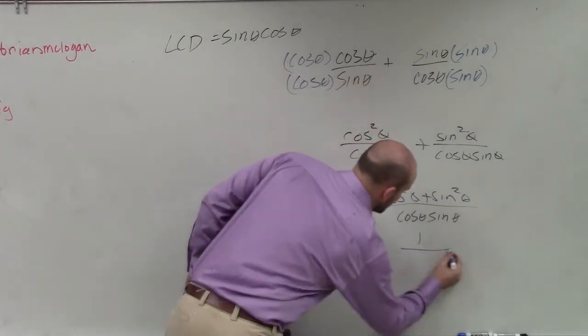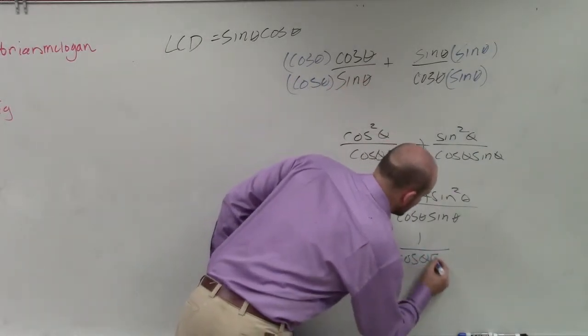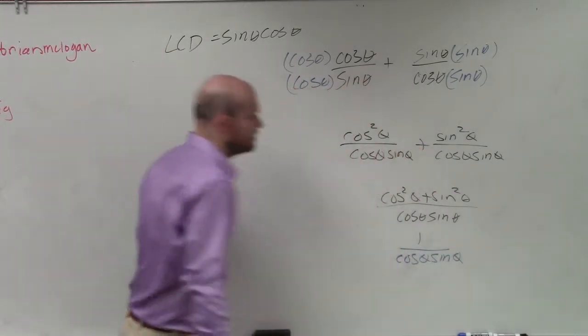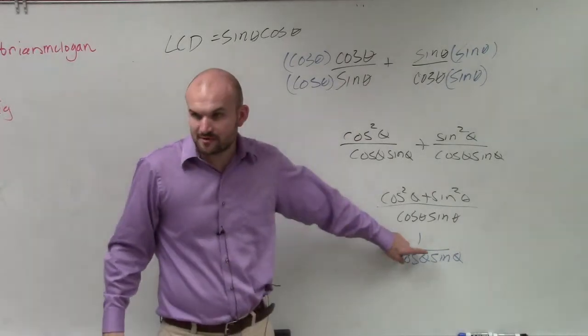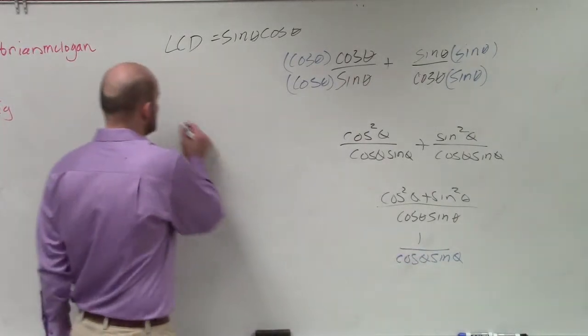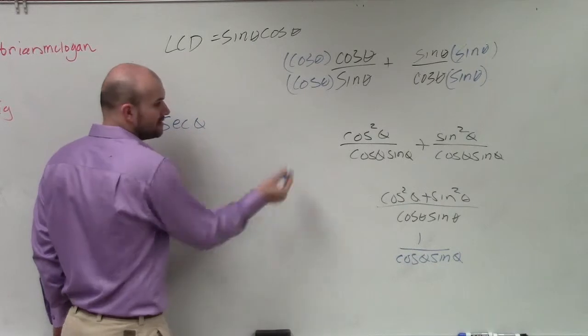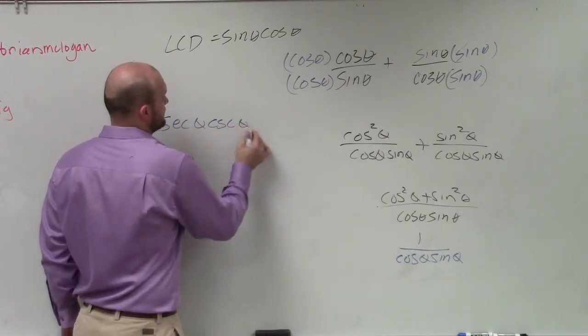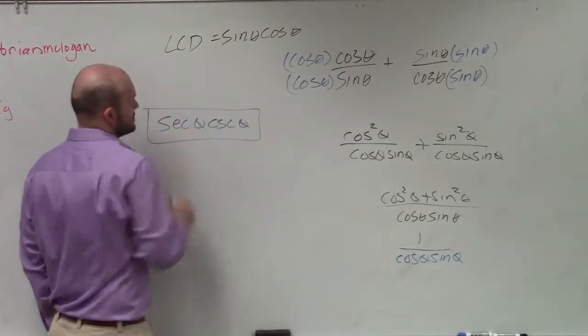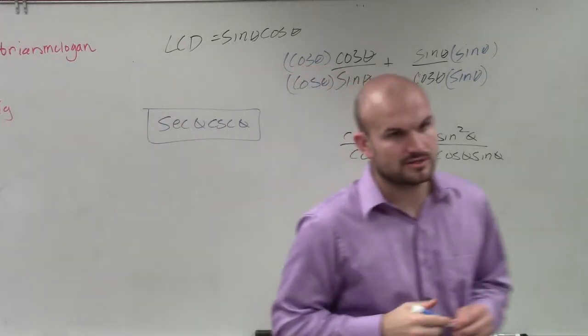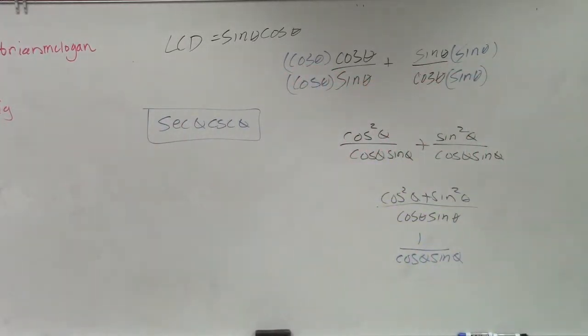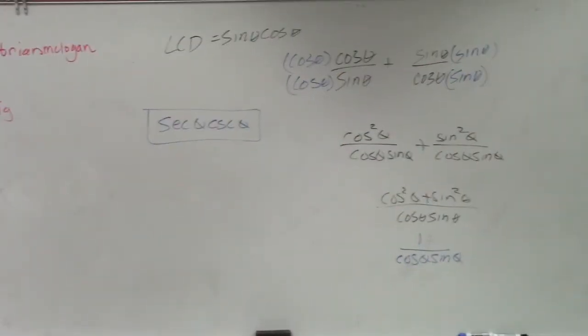So now you're going to have 1 over cosine of theta sine of theta. Well, I can rewrite these as my reciprocals. 1 over cosine is secant of theta. 1 over sine is cosecant of theta. OK, so that'd be your simplified expression. OK? So that's it.